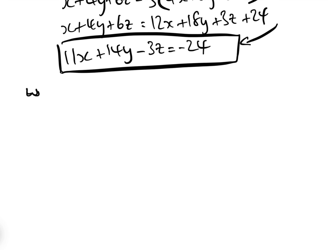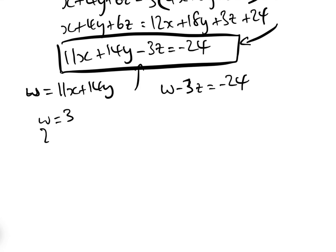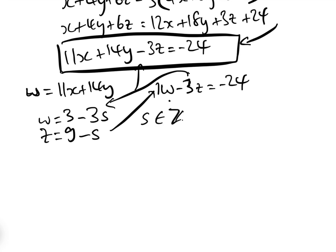What we're going to do is let W equal 11x + 14y. That means we can rewrite our Diophantine equation as W − 3z = −24. By inspection, we just need to find a particular solution for W and Z. We can see that if W = 3 and Z = 9, then 3 − 3×9 = −24. That is a particular solution. Therefore, our general solution is W = 3 − 3s and Z = 9 − s, where s is contained in the integers.